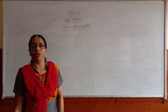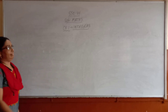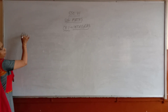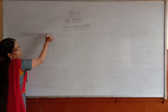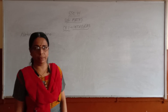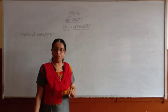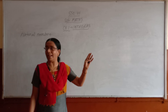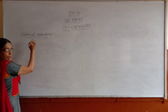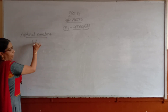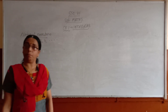In 6th chapter we have studied about natural numbers, whole numbers, etc. What are natural numbers? The numbers that we use for counting, like 1, 2, 3, 4, etc. They are called natural numbers. So natural numbers are the numbers starting with 1, 2, 3, 4, etc. The smallest natural number is 1.